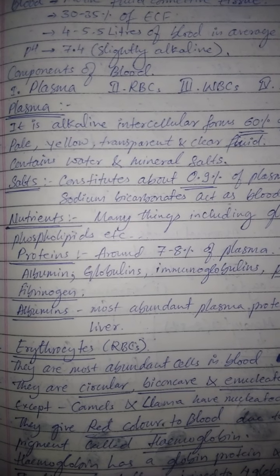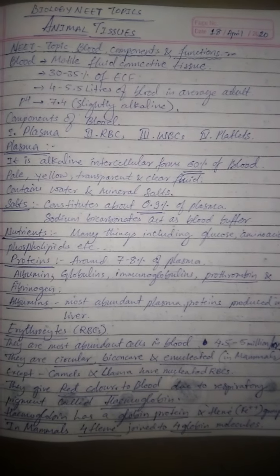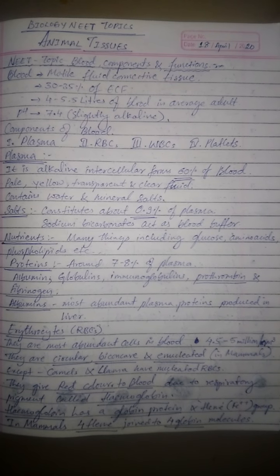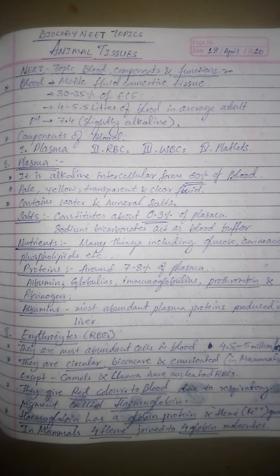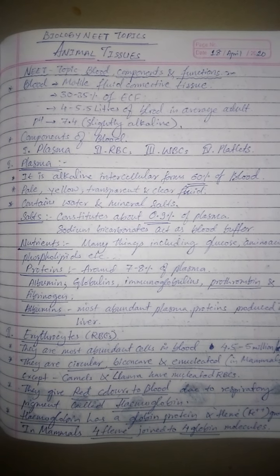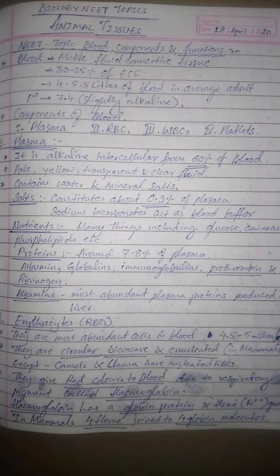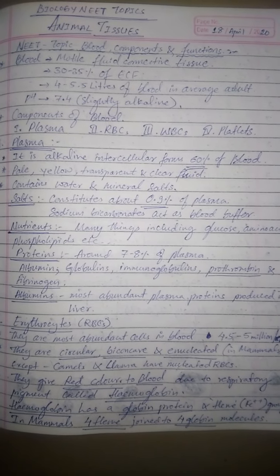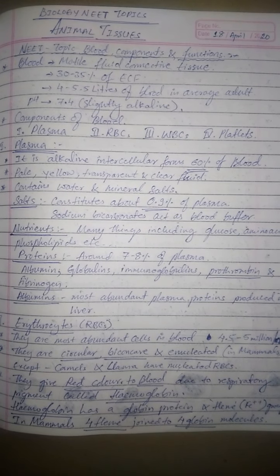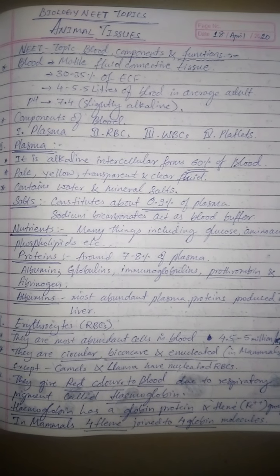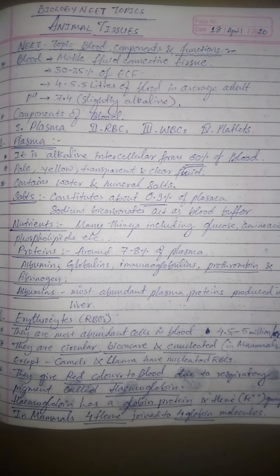Nutrients in plasma include glucose, amino acids, phospholipids, etc. Around 7.8 percent of plasma consists of proteins, which includes albumin, globulin, immunoglobulin, prothrombin, and fibrinogen. Prothrombin and fibrinogen are precursors of clotting proteins involved in the blood clotting mechanism. They are zymogens or proenzymes, meaning they are inactive in the form of prothrombin and fibrinogen. Albumins are the most abundant plasma proteins and are produced from the liver.